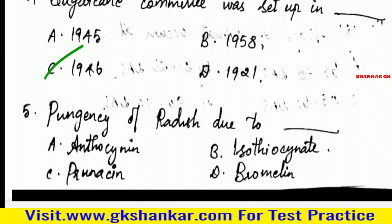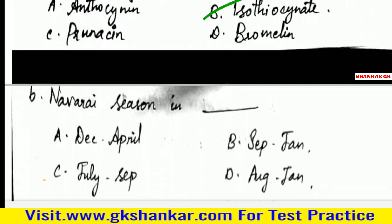Fifth question: Pungency of radish is due to — A. Anthocyanin, B. Isothiocyanin, C. Prunazin, D. Bromelin. Answer: B. Isothiocyanin.